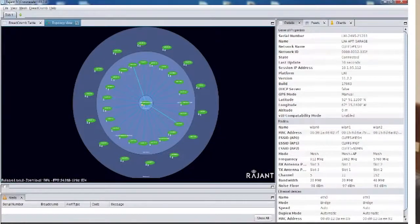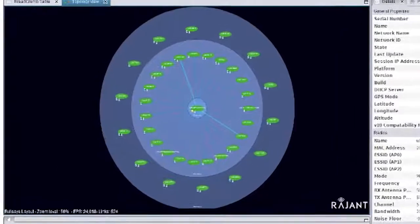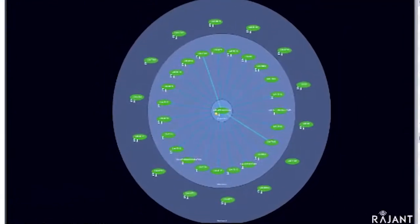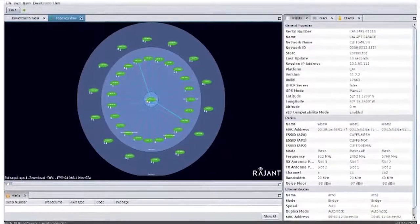This screenshot of BC Commander shows one of several available views, which we call the bullseye view. In this view, you can drag one or more breadcrumbs to the center circle, and all breadcrumbs that are one hop away are in the next concentric circle outward from there. All breadcrumbs one hop away from those are in the next concentric circle outward, and so on. And this gives you a view of the best case hop count from any node to any other node in the network.